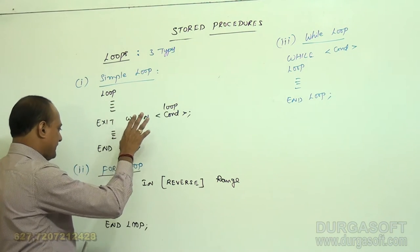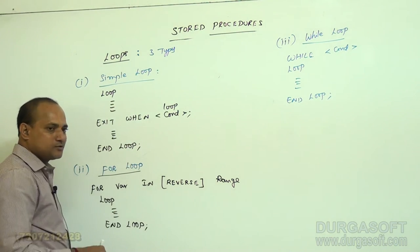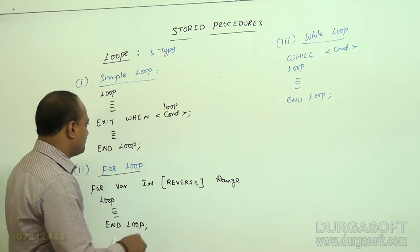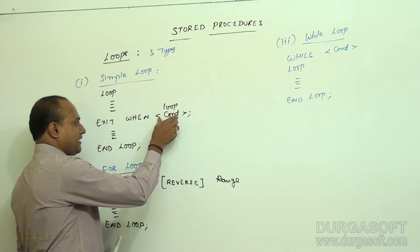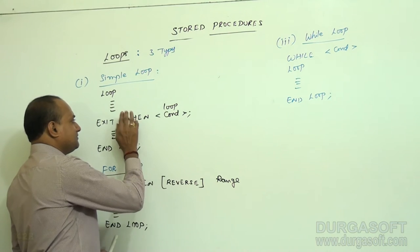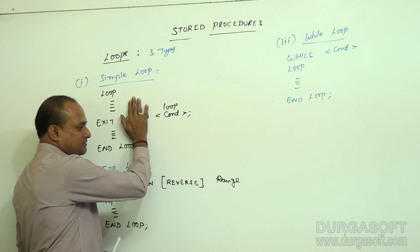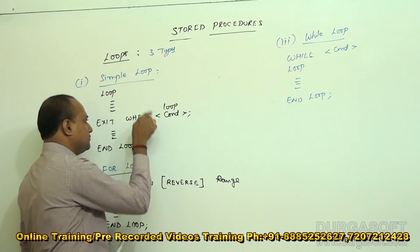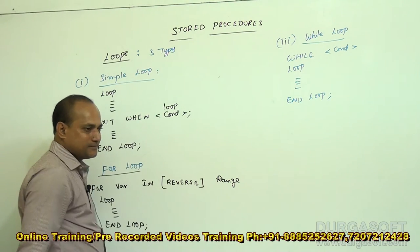So, if the first time you do not want to check any condition, but from the second time onwards you want to check the condition, then go for a simple loop. The loop terminates whenever the condition result is true. If the condition result is false, the loop repeats again and again.